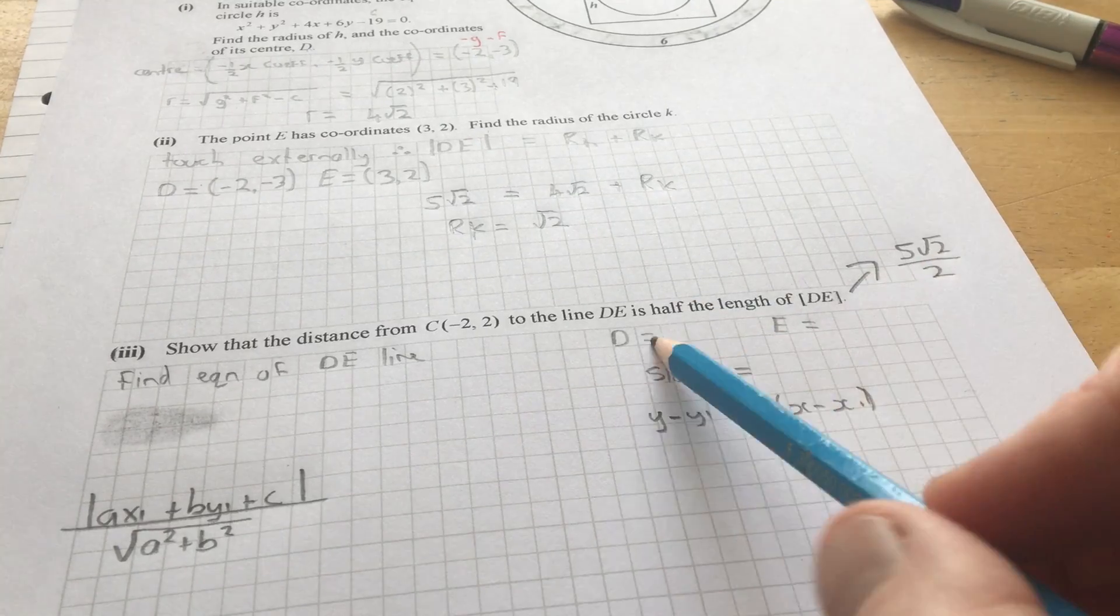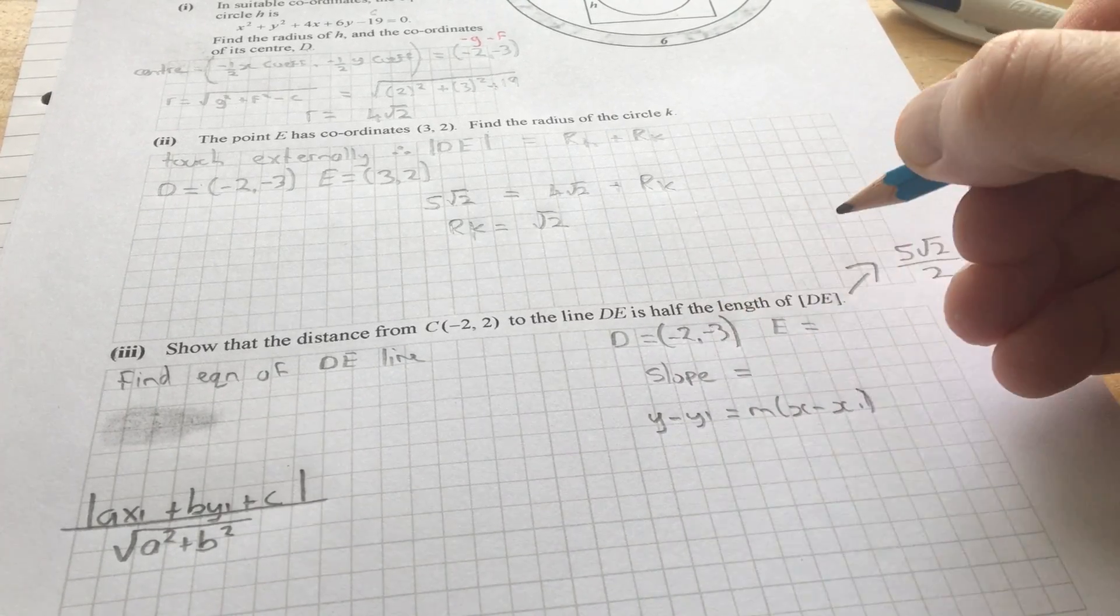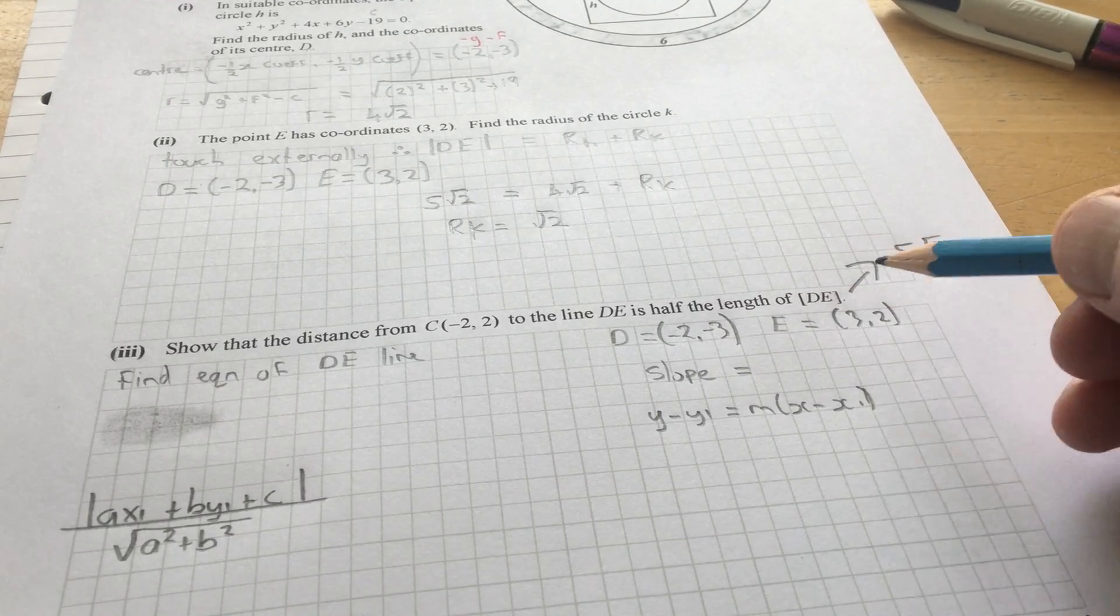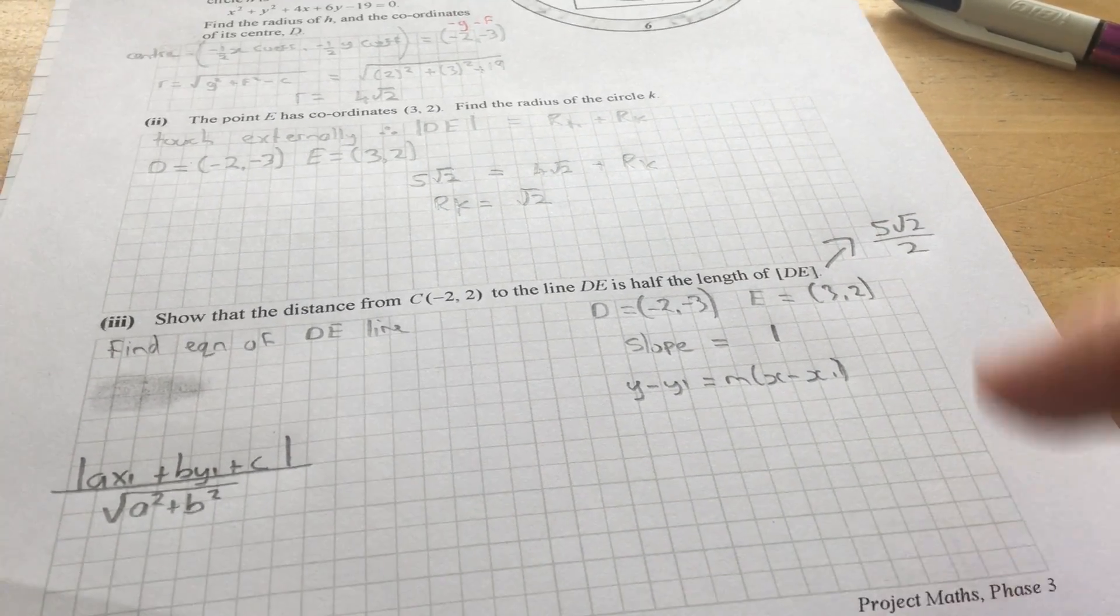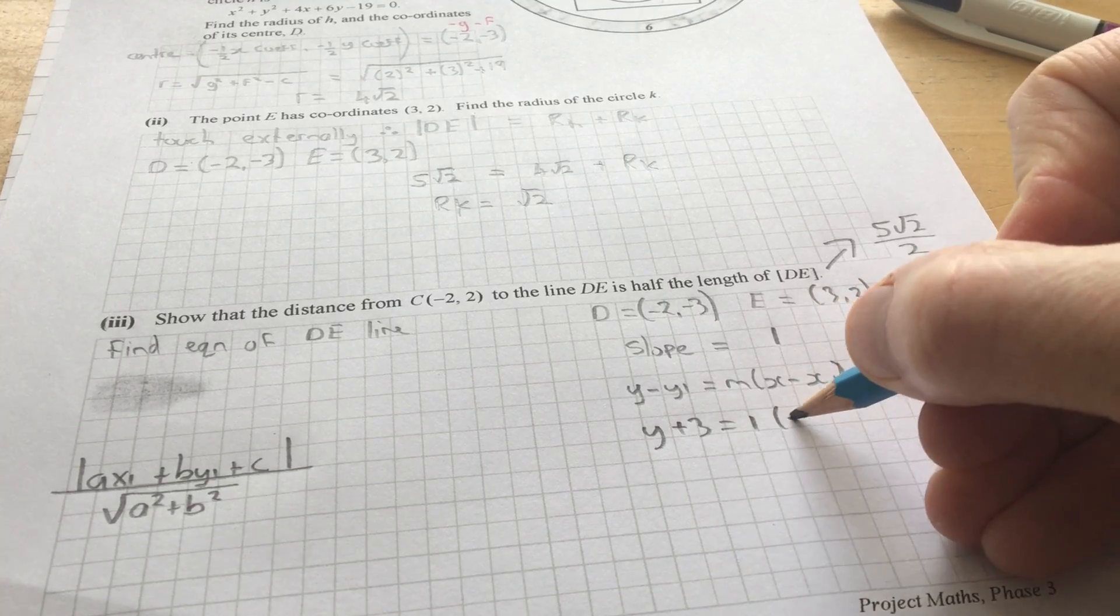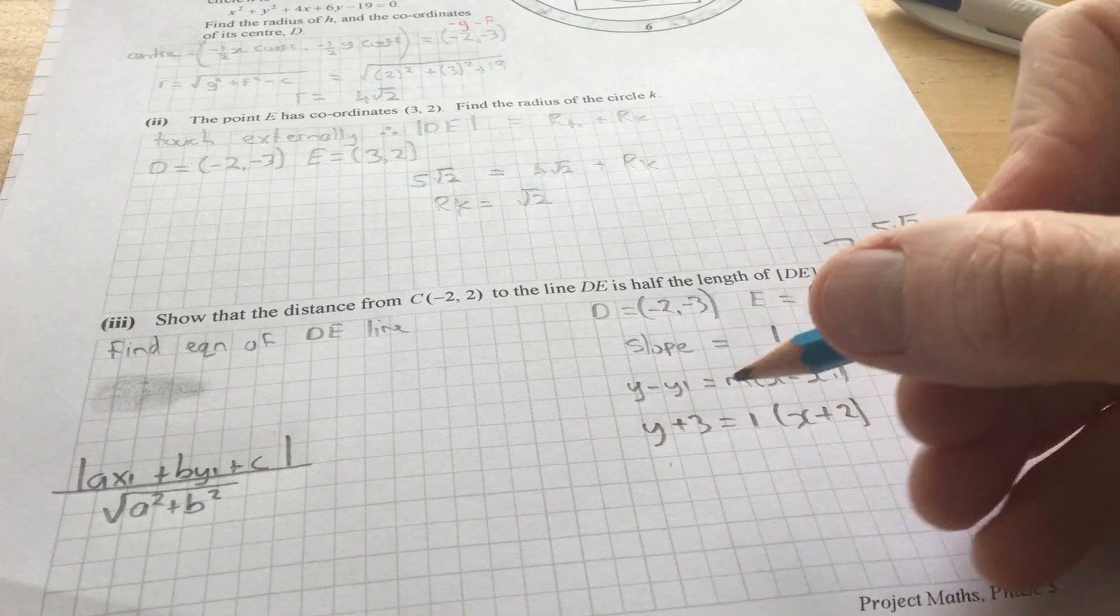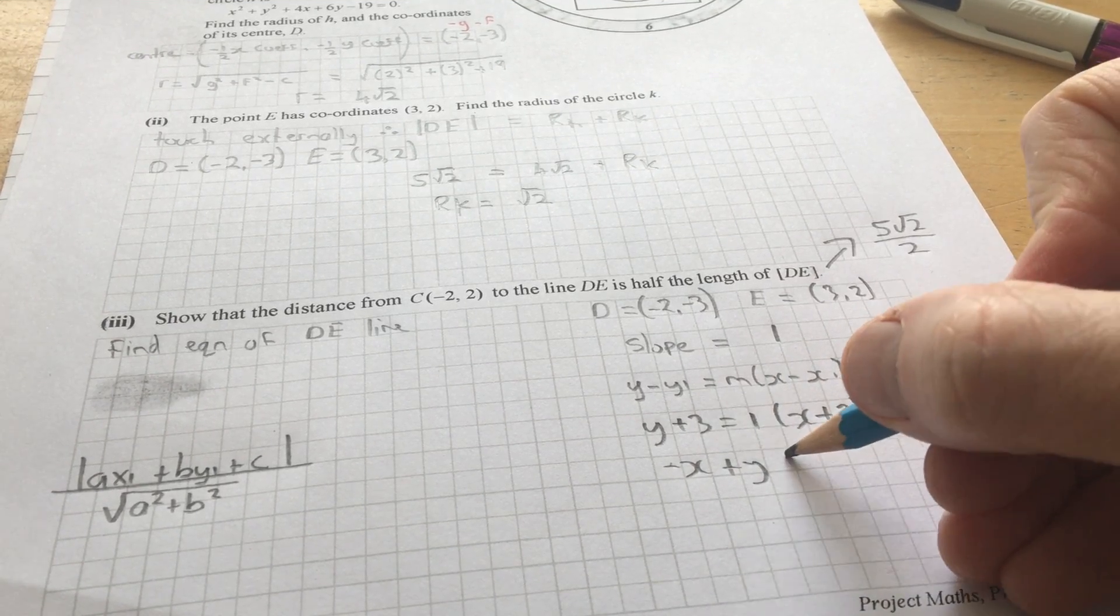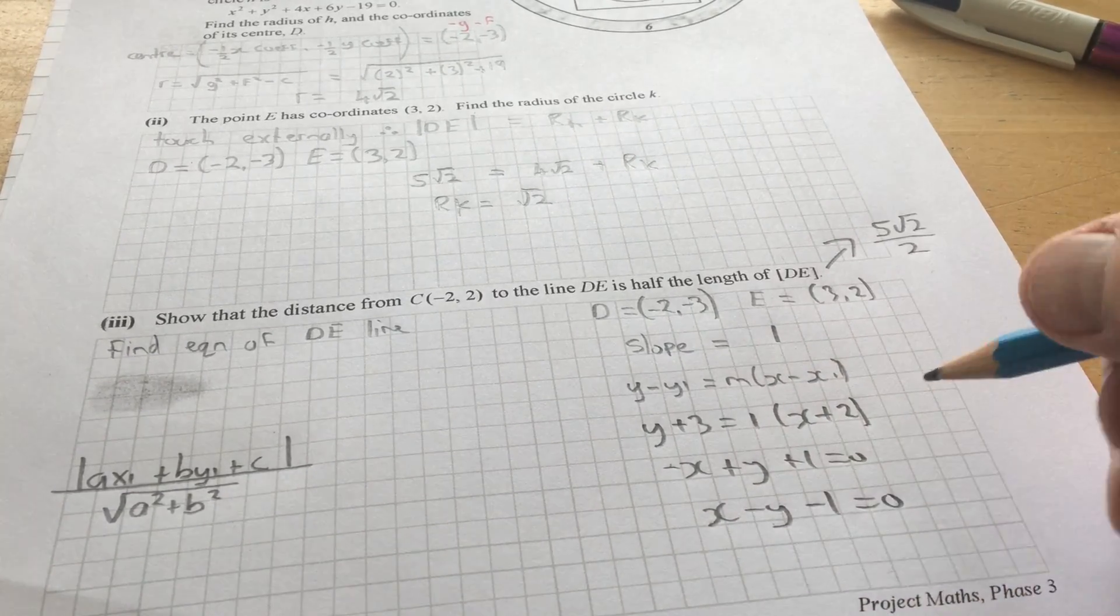Now, first of all, we have to find the equation of the line DE. Now, the point D is minus 2, minus 3. And again, the point E is 3, 2. So, if we find the slope between those using Y2 minus Y1, you'll find that the slope is 1. So, this is just the simple stuff I'll allow you to do yourself. And then Y minus Y1, so say Y minus minus 3 equals M times X minus minus 2. So, that will give you the equation of the line. So, minus X plus Y plus 1 equals 0. Or X minus Y minus 1 equals 0.